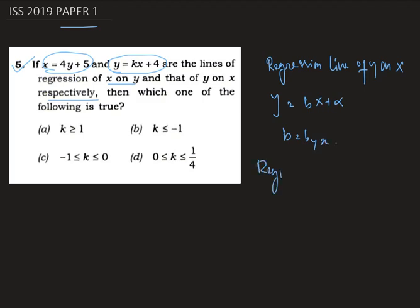And the regression line of x on y can be denoted as x equals by plus alpha, where b equals bxy.